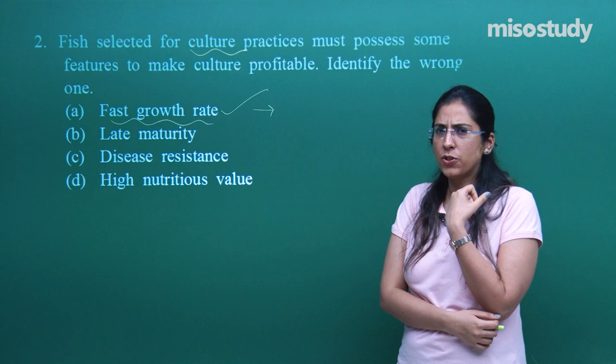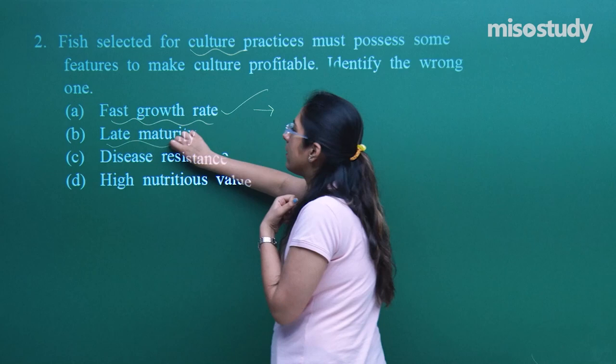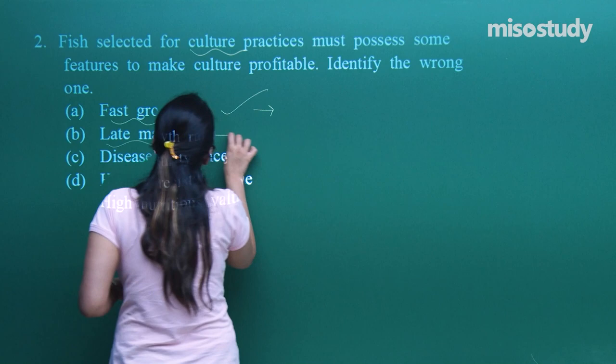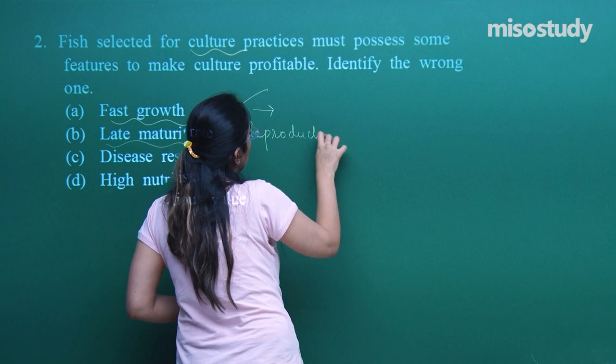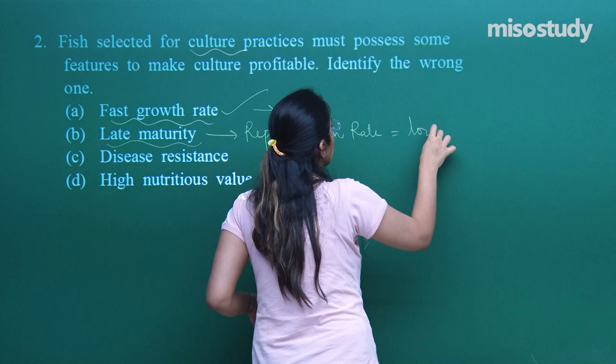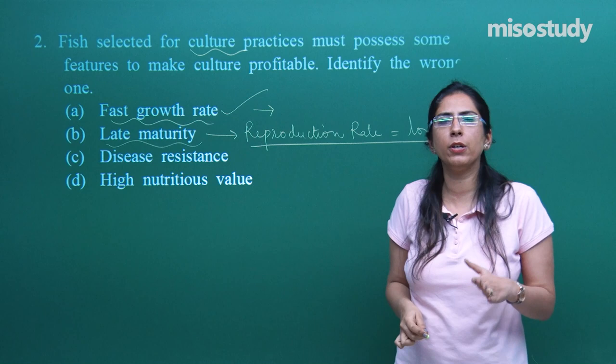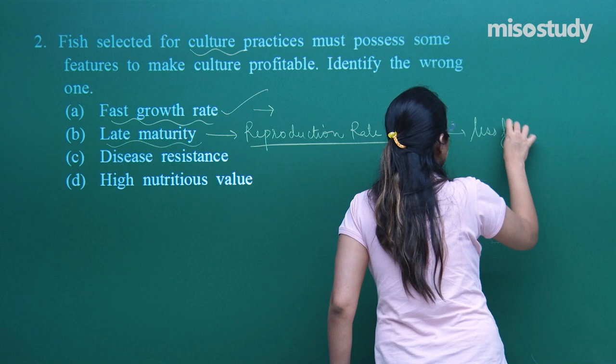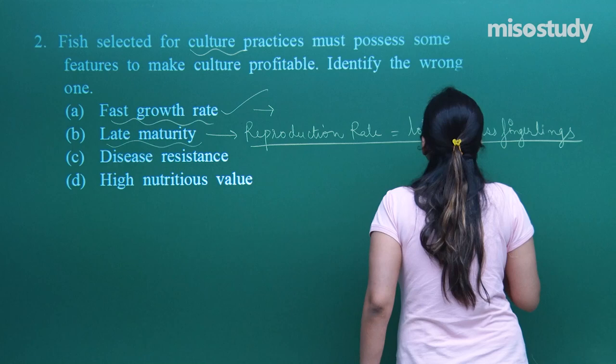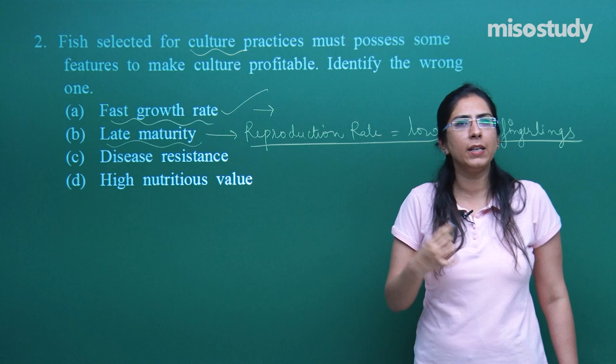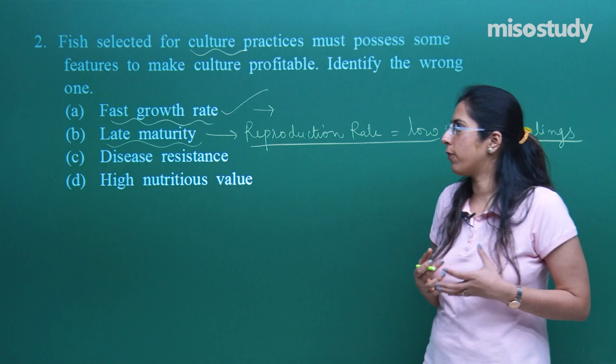Option B is late maturity. Is late maturity a desirable reason? No, not at all — because if they mature later in their life, there are chances that the reproduction rate will be low. Because of late maturity, reproduction rate will be low. When reproduction rate is low, the number of fingerlings produced will be less, and we will not be able to culture properly or get the amount of fish we are looking for.